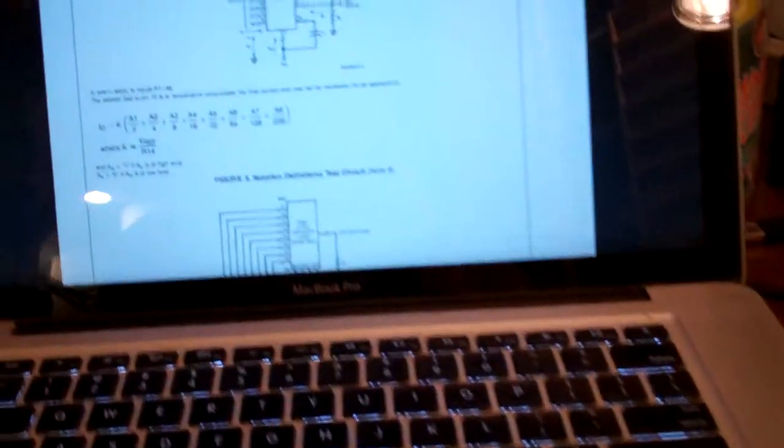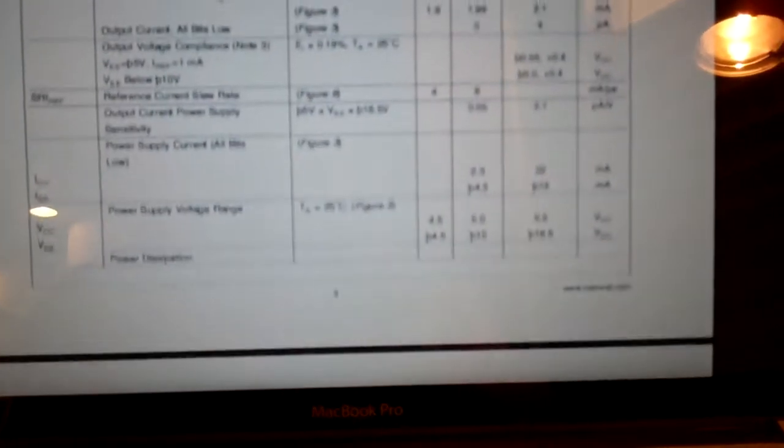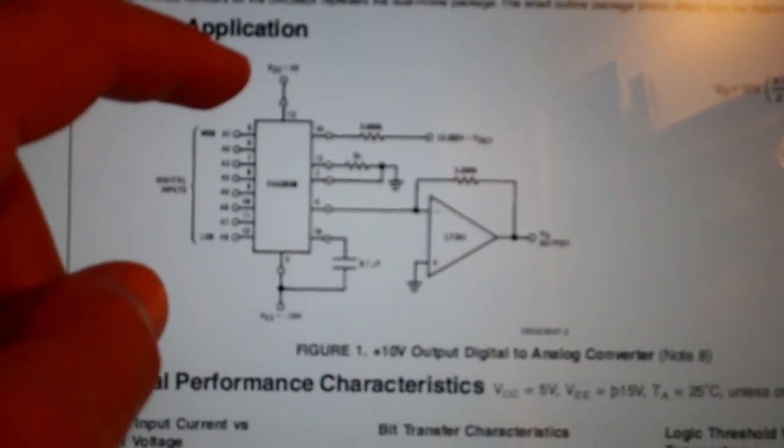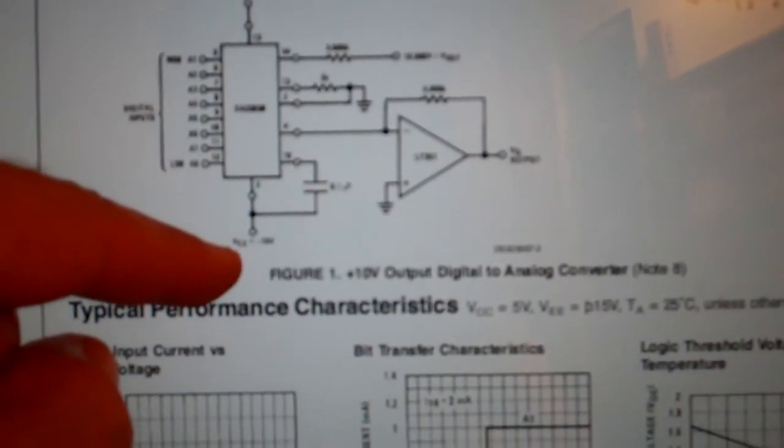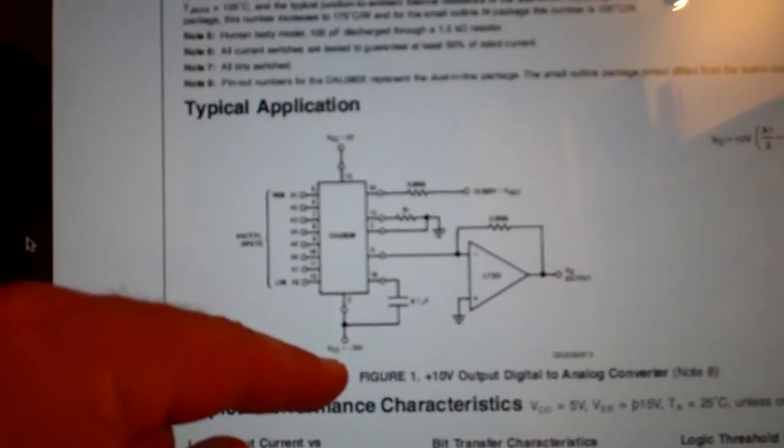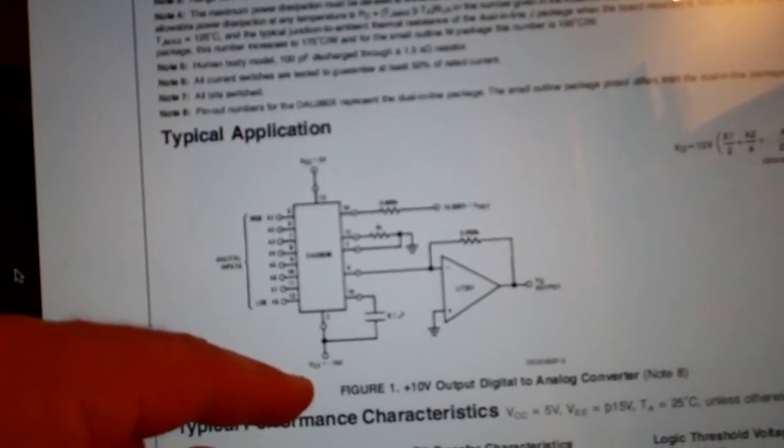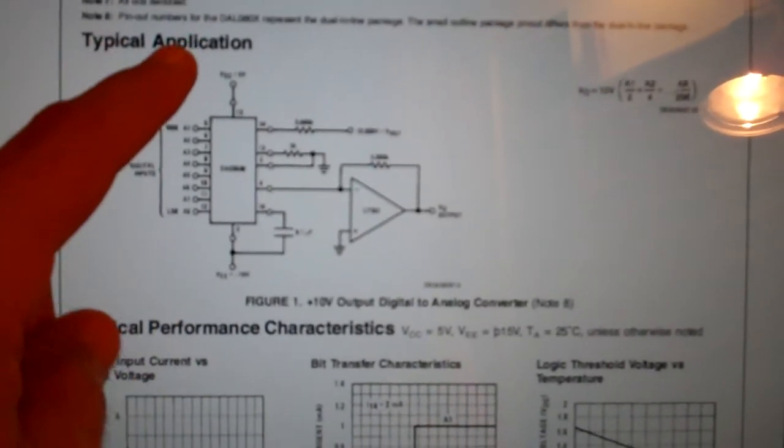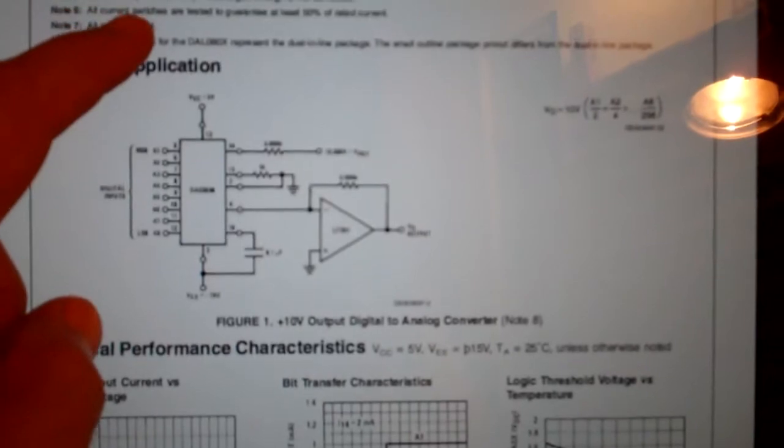In the typical application in the datasheet, they've got a plus 5 and a minus 15. That always struck me as a strange way of doing things.